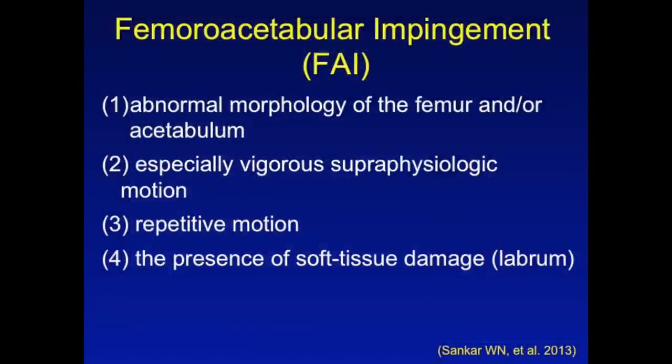There are four major components of femoroacetabular impingement that one should be aware of. Firstly, FAI is associated with an abnormal morphology of the femoral head and the acetabulum. It is almost always associated with vigorous superphysiologic motion of the hip and, as a repetitive use injury, repetitive motion of the hip. These findings result in soft tissue damage of the hip, particularly the cartilage and, more significantly, the labrum.